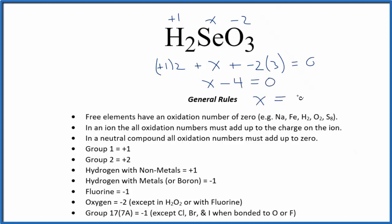That means X is going to equal positive four. So the Se in H2SeO3 is positive four. If you multiply two times one plus four, and you add three times negative two, that's all going to equal zero. This is Dr. B with the oxidation number for each element in H2SeO3. Thanks for watching.